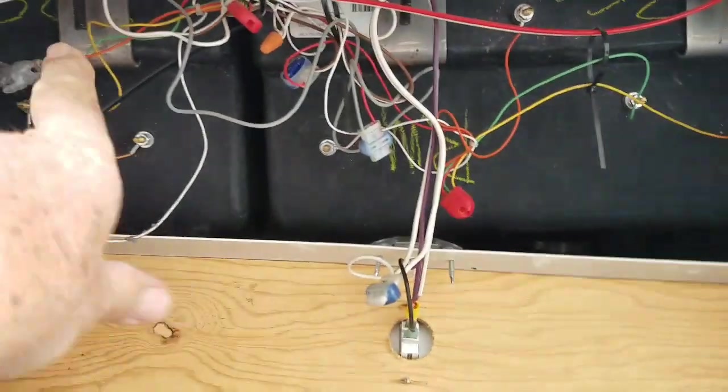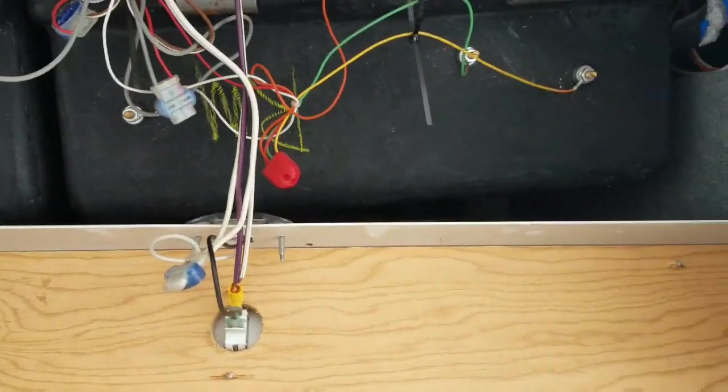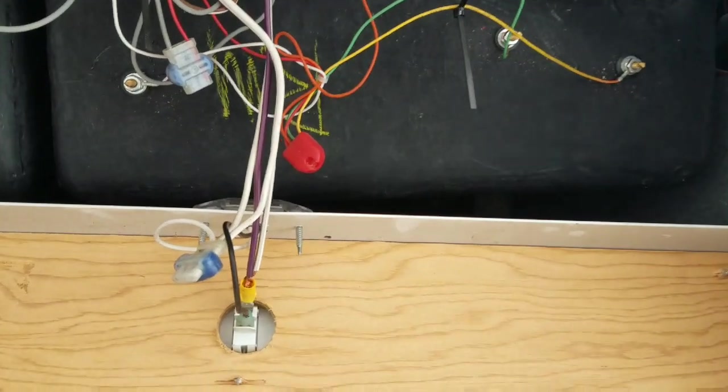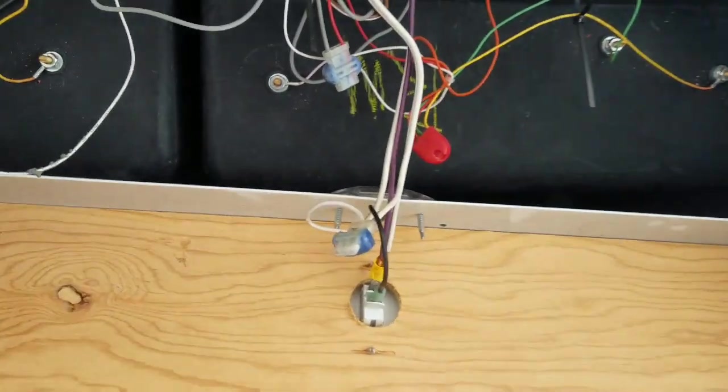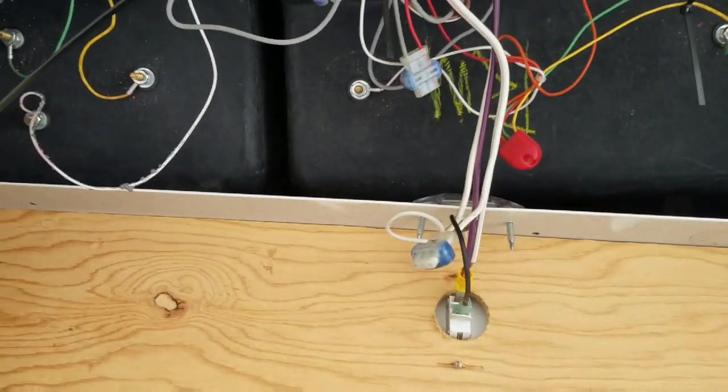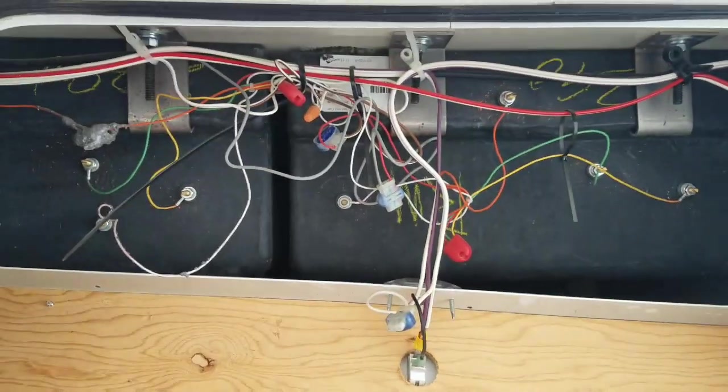You can see the side of the two holding tanks. The one on the left is the gray water and the one on the right is the black water, having the same problem with both of them.